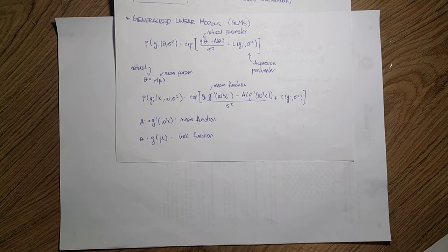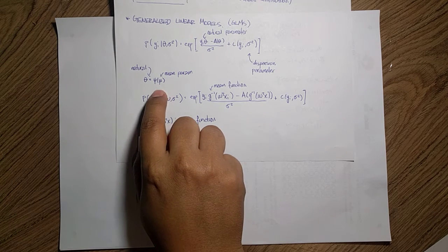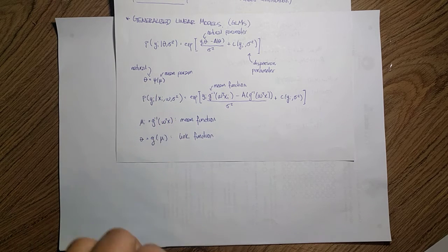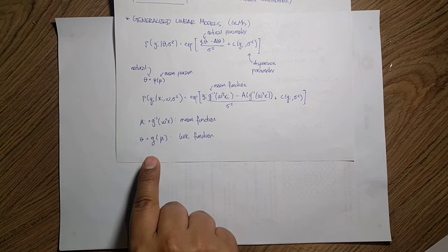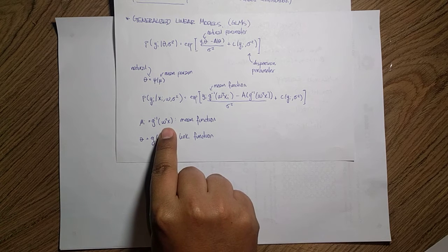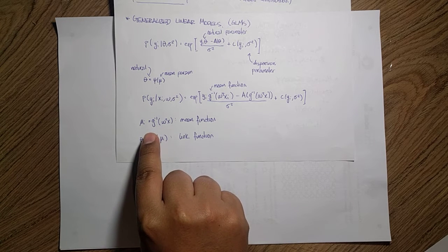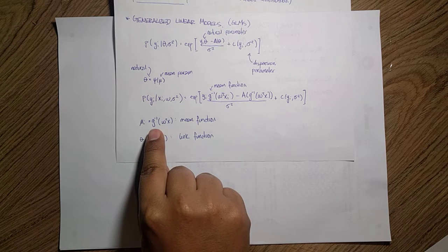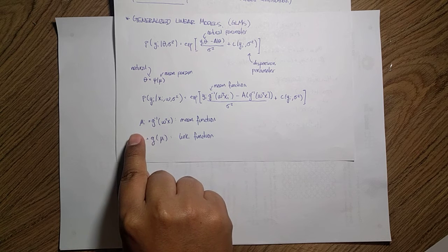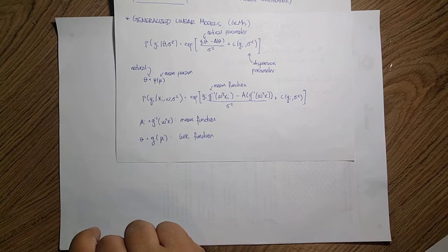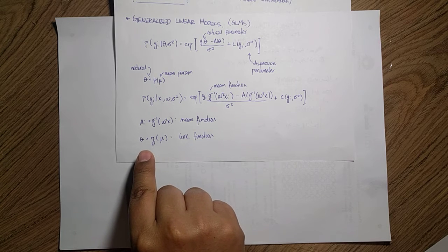In this generalized form we are going to consider two types of parameters: the mean parameters that we were working with, and what we call the natural parameter. What happens inside is that we have a way of moving back and forward between these representations — we can go from the data through what we call a mean function, which is just the inverse of the link function, and that allows us to go from the data to the mean parameter. We also have a way of going from the mean parameter all the way up to the natural parameter theta.